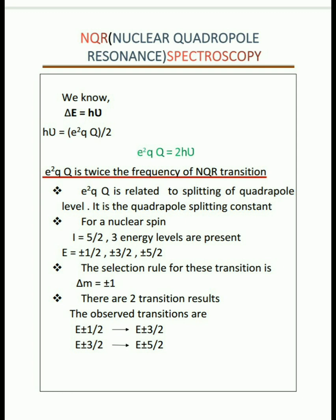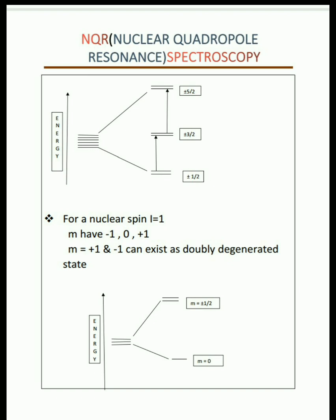For nuclear spin I = 5/2, the mᵢ values are 5/2, 3/2, 1/2, −1/2, −3/2, and −5/2, or simply ±1/2, ±3/2, and ±5/2. The energy levels split into three doubly degenerate levels. The selection rule for transitions is Δmᵢ = ±1, so transitions occur from ±1/2 to ±3/2 and from ±3/2 to ±5/2.